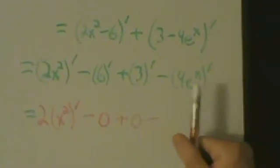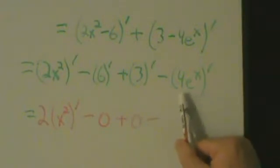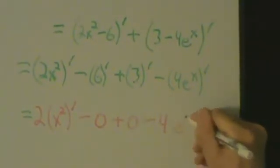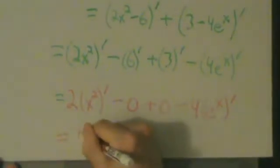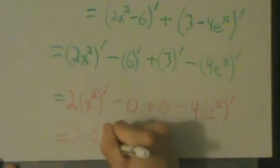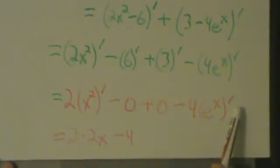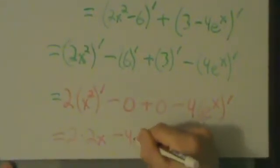And then what's happening here, 4e^x. Okay, so 4 is just a constant, so we can pull it out, and then what do we have left? e^x and then derivative. So then the last step, almost last step, 2 times the derivative of x² is just 2x, right? So 2x - 0 + 0, that's nothing. And then minus 4 times what? (e^x)'. So that means derivative of e^x, but we know that the derivative of e^x is just e^x. So that's what we have here.